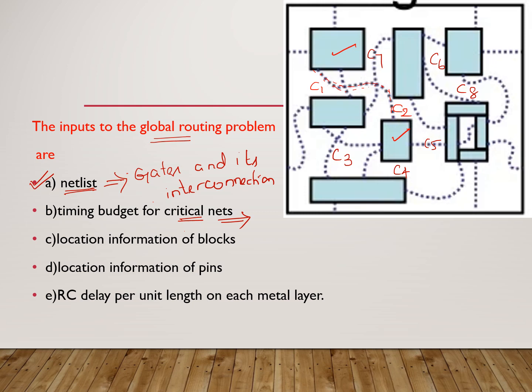For global routing, the first input is the netlist, the second is timing detail — the propagation delay for the critical path. The third input is the location information of blocks: block 1, block 2, block 3, block 4, and so on up to block 10 and many more. We need the exact location of each block. That is the third information we have to provide.